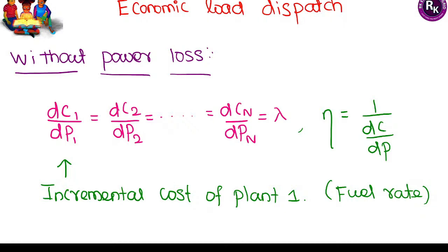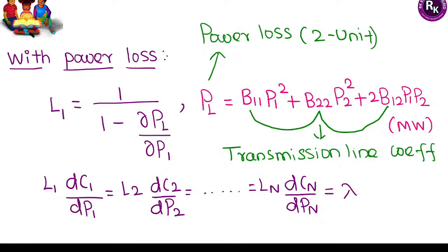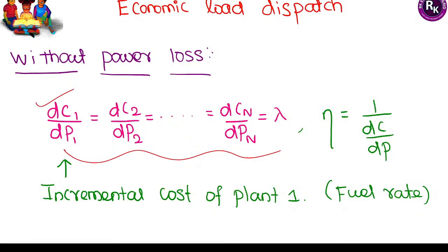Economic load dispatch is another important topic. Without power loss, the incremental cost of fuel — the formula to remember — must become equal for each and every power plant. That is the condition: incremental cost of each and every plant should become equal without power loss. With power loss, we also consider the penalty factor. The product of penalty factor and incremental cost must be equal for all plants.